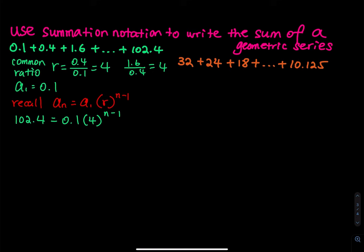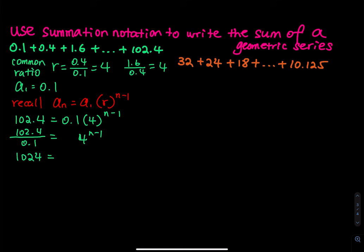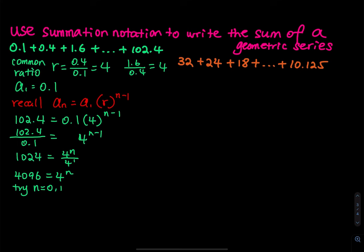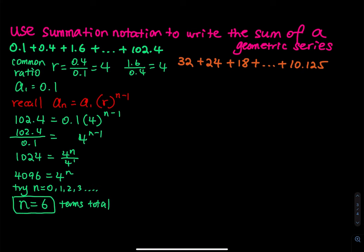So we take 102.4 divided by 0.1, which gives 1024 equals 4 to the n minus 1. That is 4^n divided by 4^1. Multiply both sides by 4: you get 4096 equals 4^n. To solve for n you have to try n equals 0, 1, 2, 3, and keep trying. As you try, you will see that n is equal to 6 terms total. This method is called trial and error. Now we have n, and I can write the final answer.